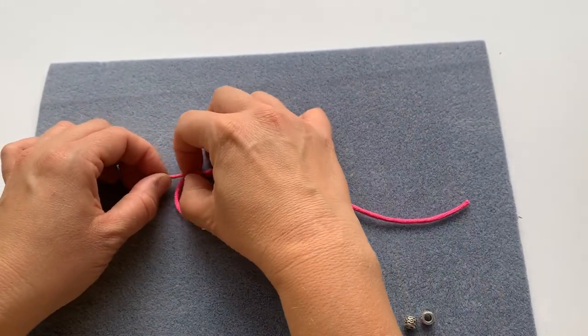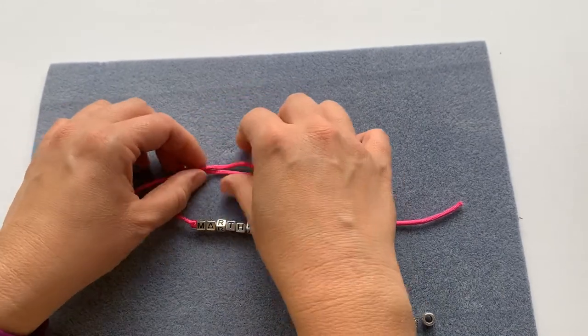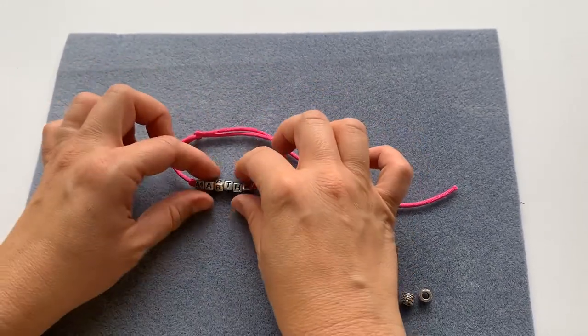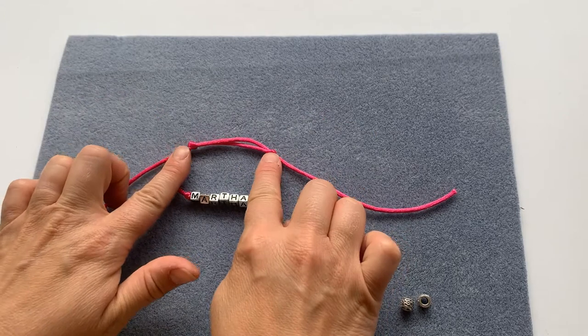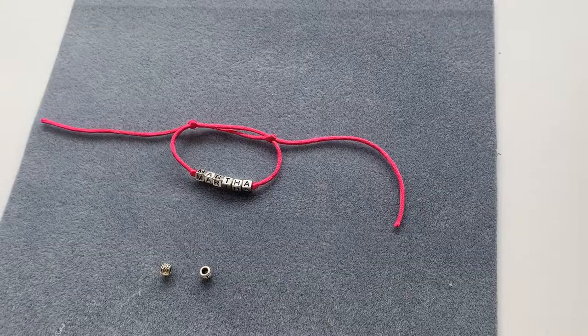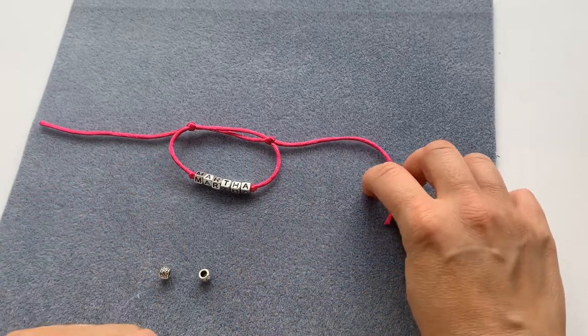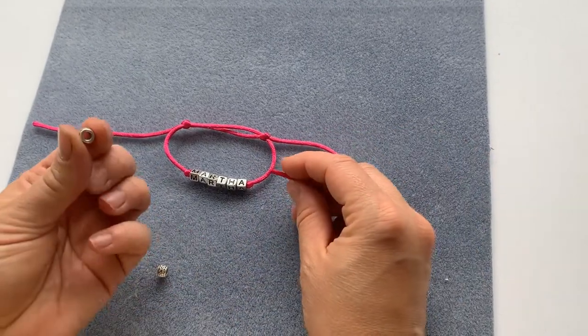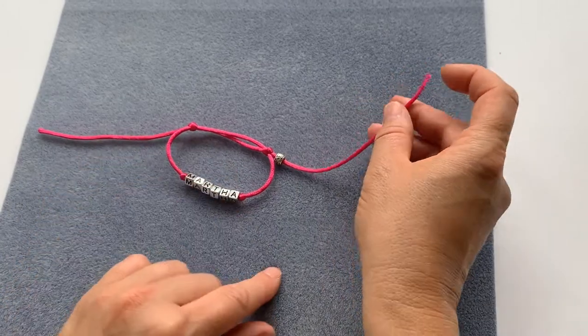And pull it tight. Okay, so there we have our bracelet with our two sliding knots. Okay, so now I've completed my two sliding knots, I'm going to add my end beads, so threading one on.